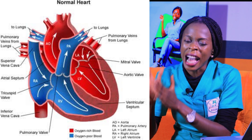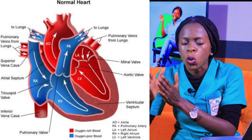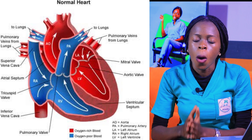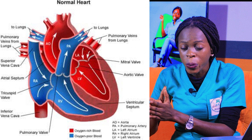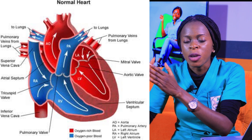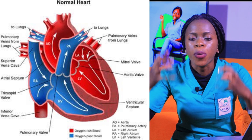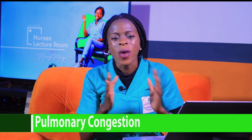In left-sided heart failure, the left ventricle is unable to pump blood through the aortic valve into the aorta and to all parts of the body. There will be accumulation of fluid in the left ventricle, leading to accumulation in the left atrium, and then accumulation of fluid in the lungs — resulting in pulmonary congestion. So in left-sided heart failure there is pulmonary congestion, while in right-sided heart failure there is peripheral edema.